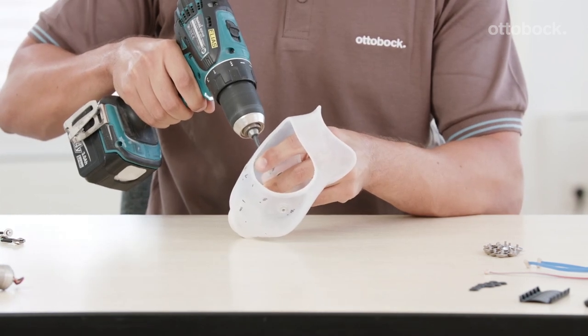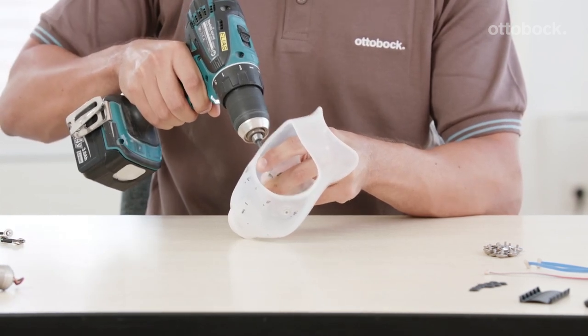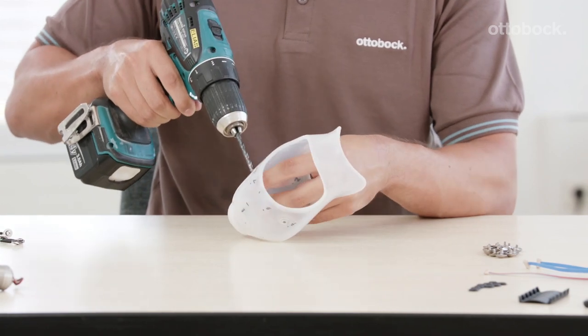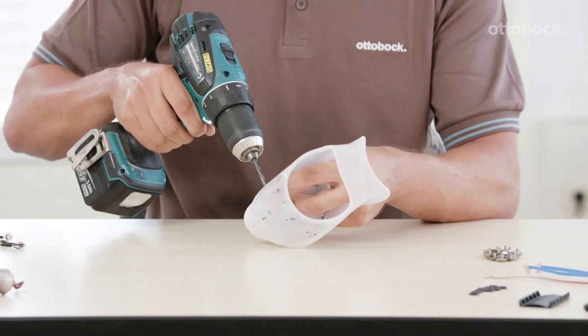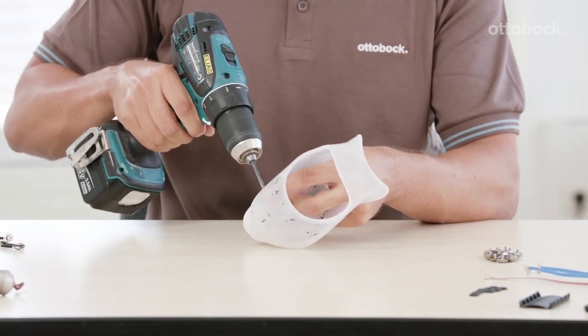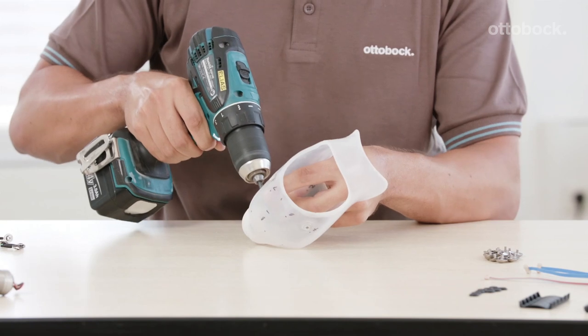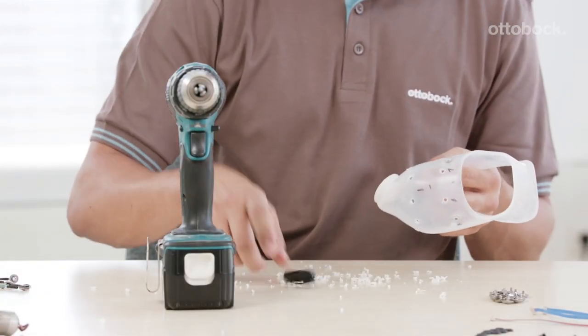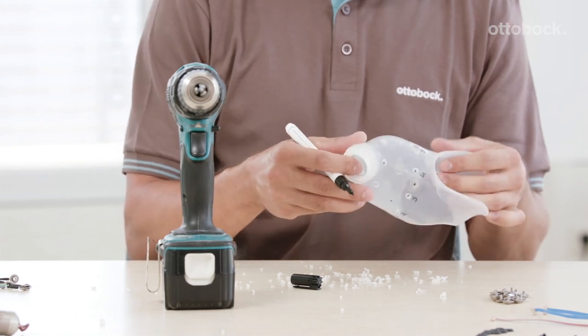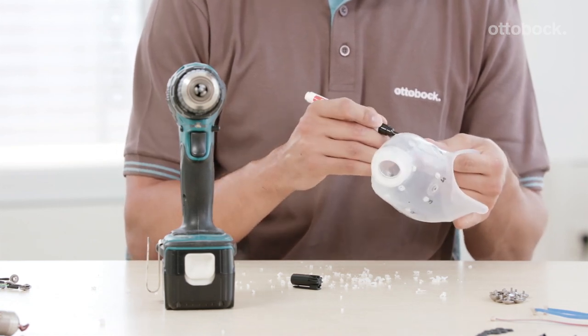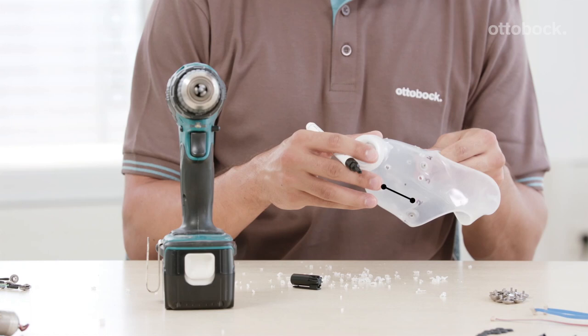Now drill 5mm holes into each marked electrode position. The electrode positioning gauge specifies 16 electrode holes. Two additional holes must be drilled for the ground contact. Ideally these holes lie between two electrodes on a position where weak muscle activity is expected and where the electrode does not lift off.